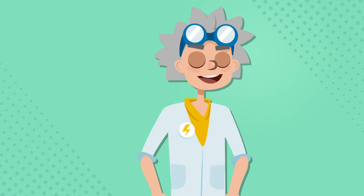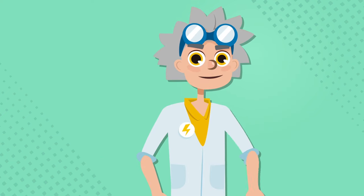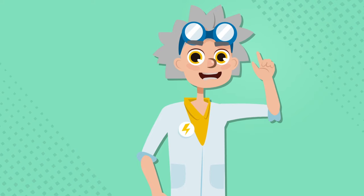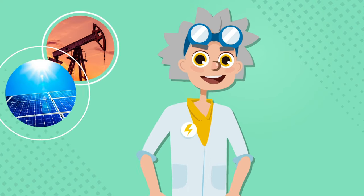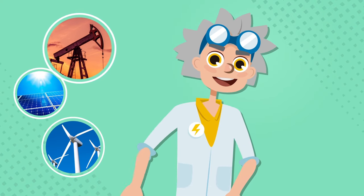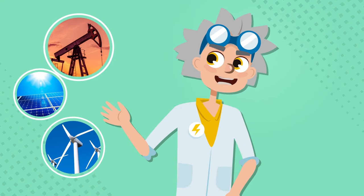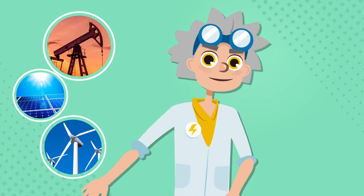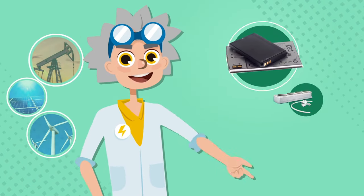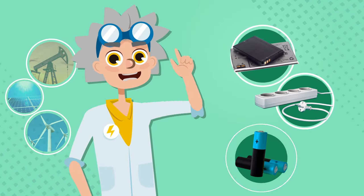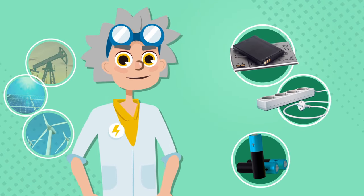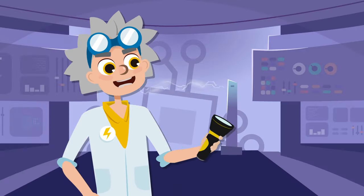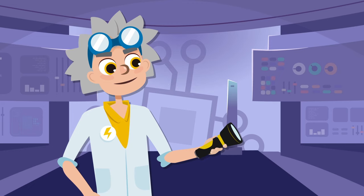Circuits have two parts. The first is the source of electricity, which we discussed in the previous video. The second corresponds to the materials that allow the flow of electric charges. I'm going to show you.